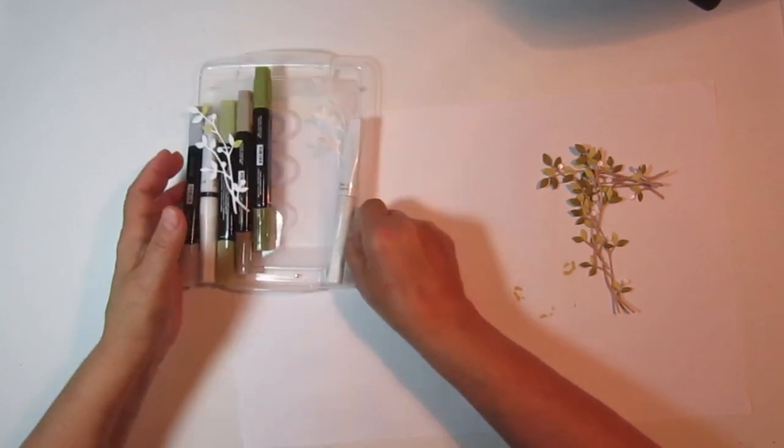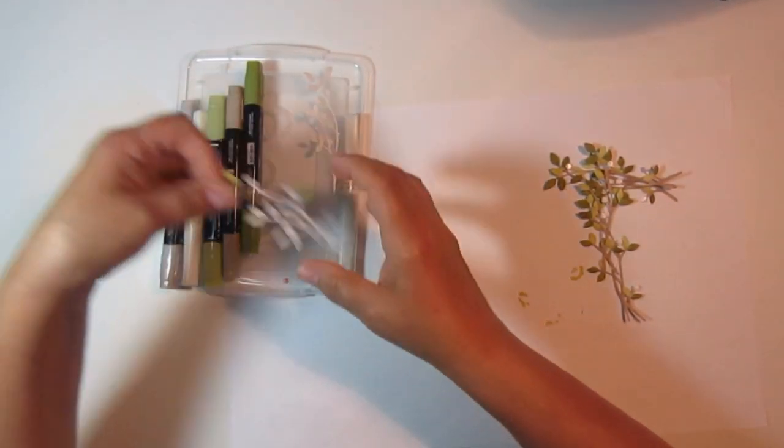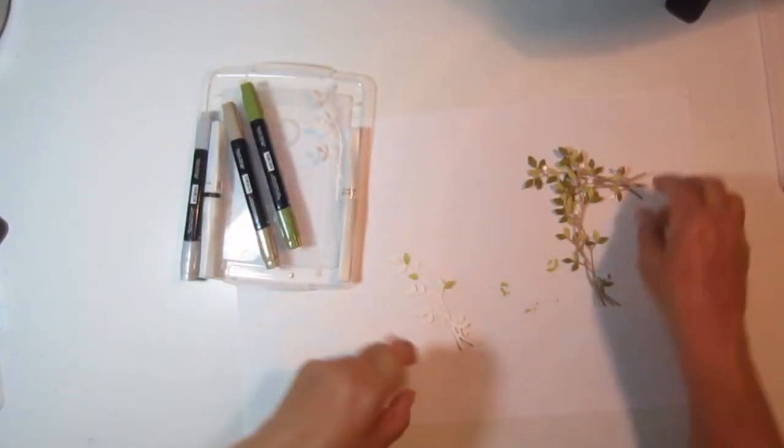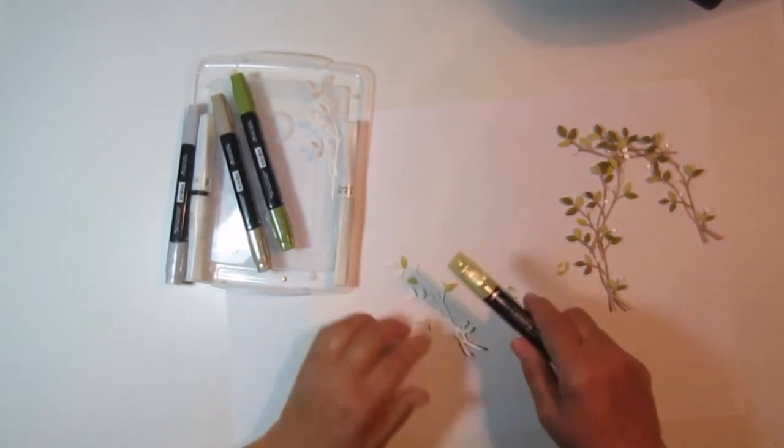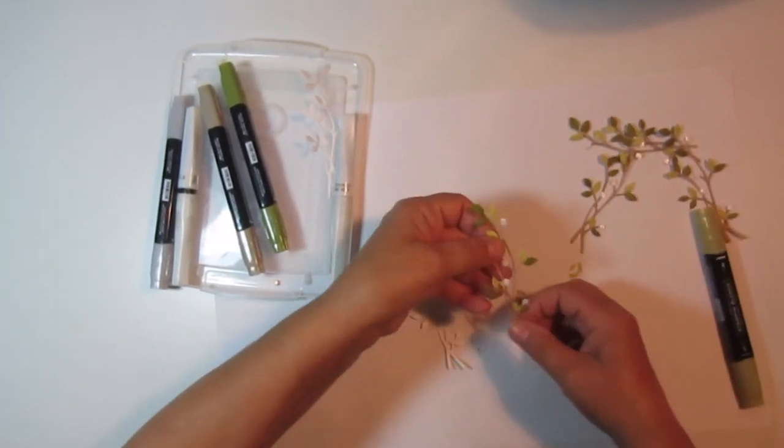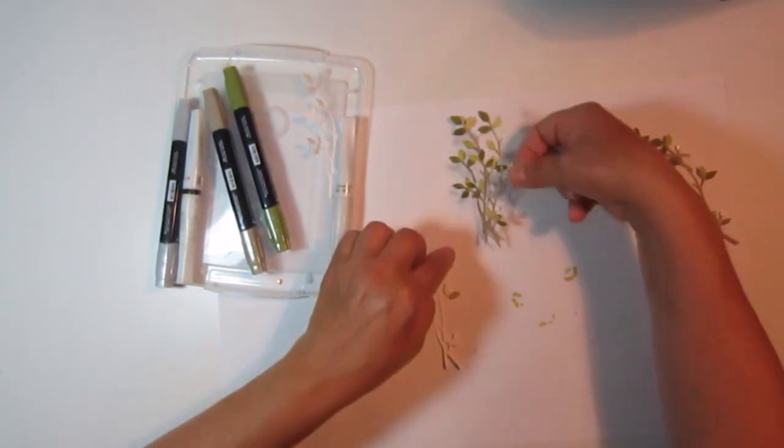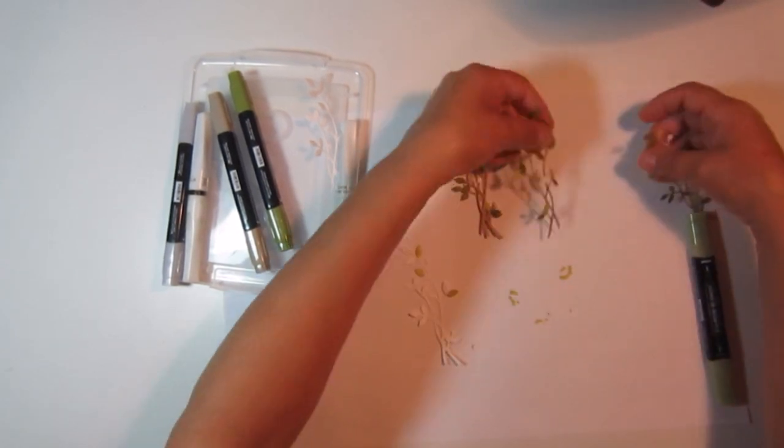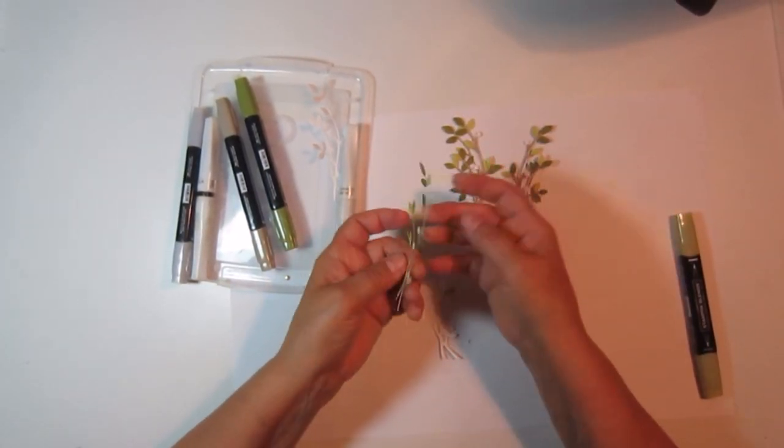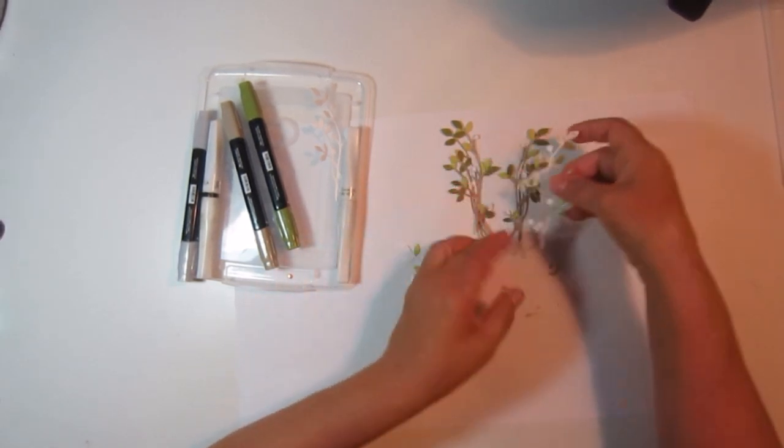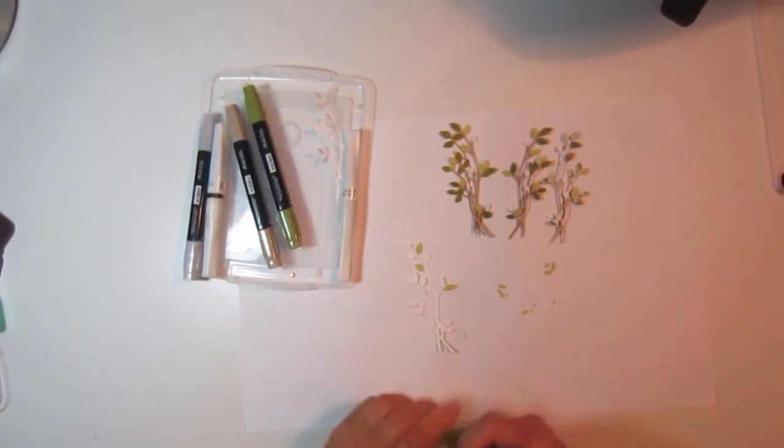These are from the Birds and Branches dies, so some of them you'll see there's like a front and the back. So some of these I did one way and then some of them I did both ways.